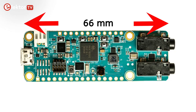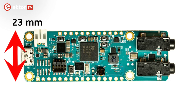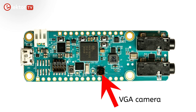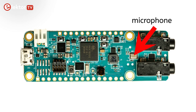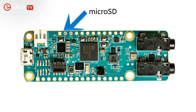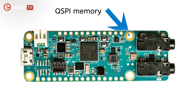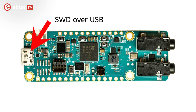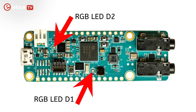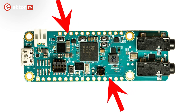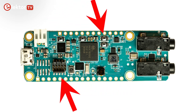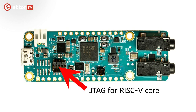The MAX78000 Feather is a small module, measuring only 66 by 23 mm, featuring the MAX78000, a tiny VGA camera, a digital microphone, stereo audio I/O, a microSD card slot, 1 MB of QSPI RAM, an SWD debugger programmer port over USB, and a LiPo battery charger. There are also two user RGB LEDs, two user push buttons, and extension connectors compatible with Adafruit's Feather form factor. A separate JTAG connector is available for programming and debugging the RISC-V core.